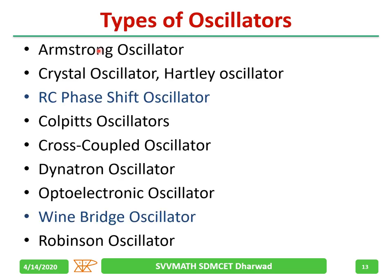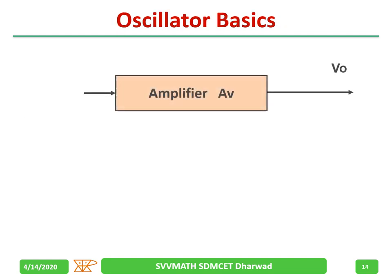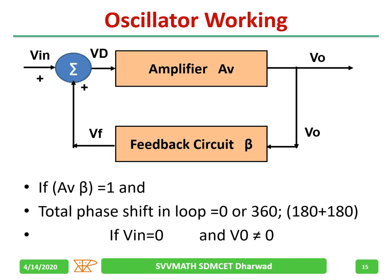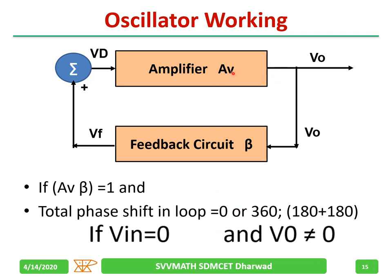Different types of oscillators exist, but in this video we are going to discuss only two: RC phase shift oscillator and Wien bridge oscillator. When we have an amplifier with feedback and A·β equals 1, with the total phase shift becoming 360° or 0°, even if you remove the input voltage you will get an output — the amplifier starts behaving as an oscillator.